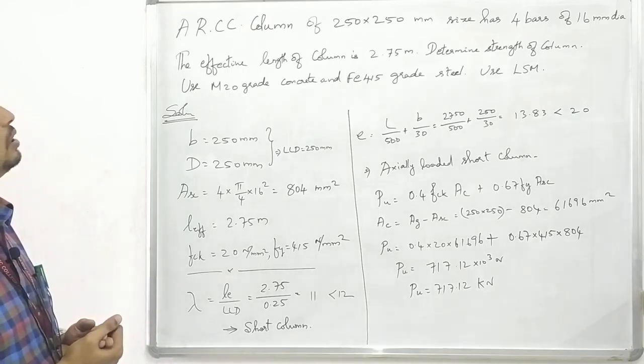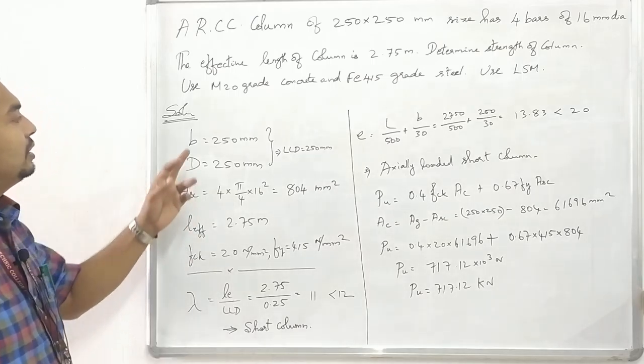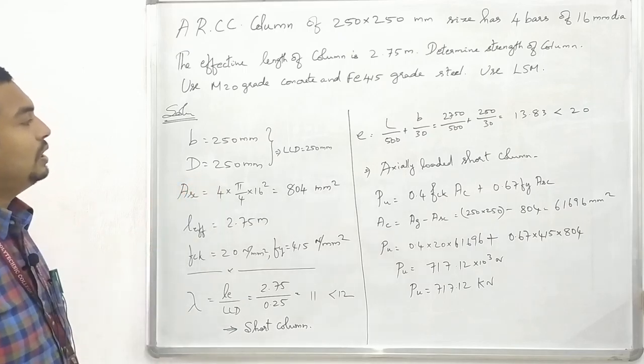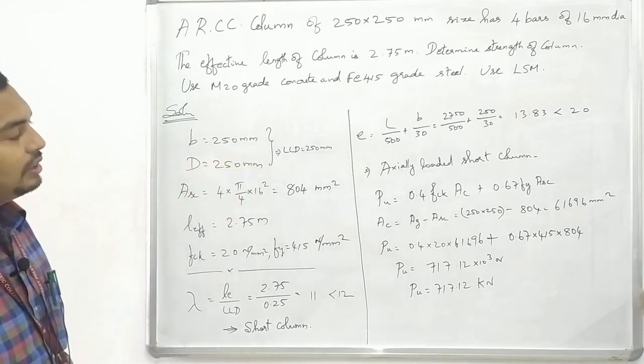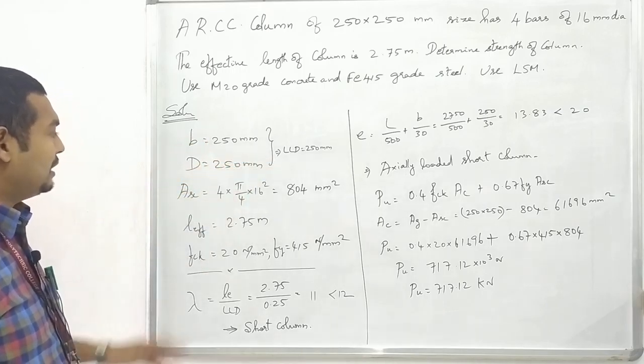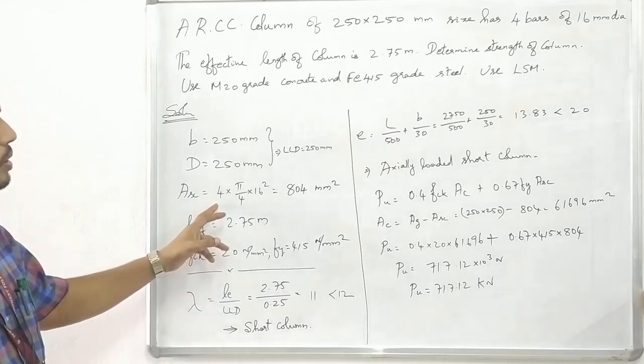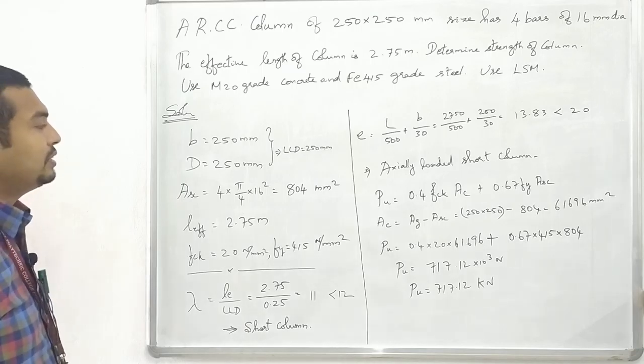An RC column of 250 by 250 millimeters size has 4 bars of 16 mm diameter. The effective length of column is 2.75 meters. Determine strength of column using M20 grade concrete and FE 415 grade steel using limit state method.